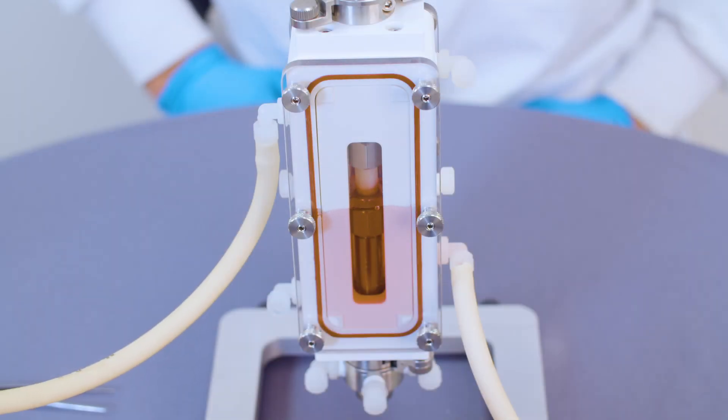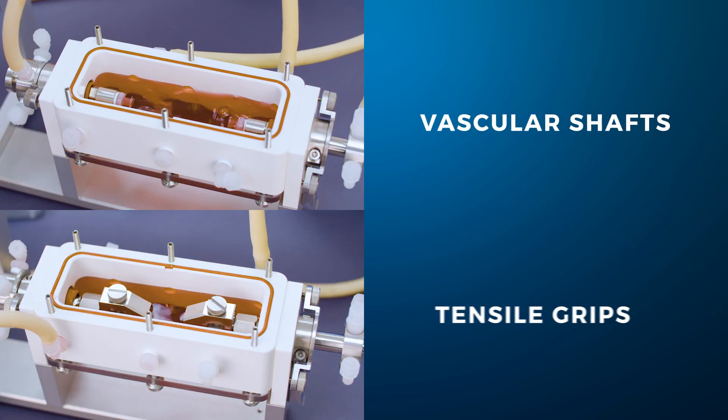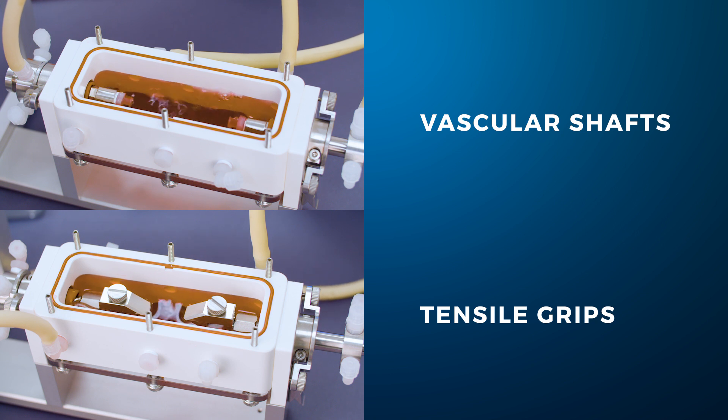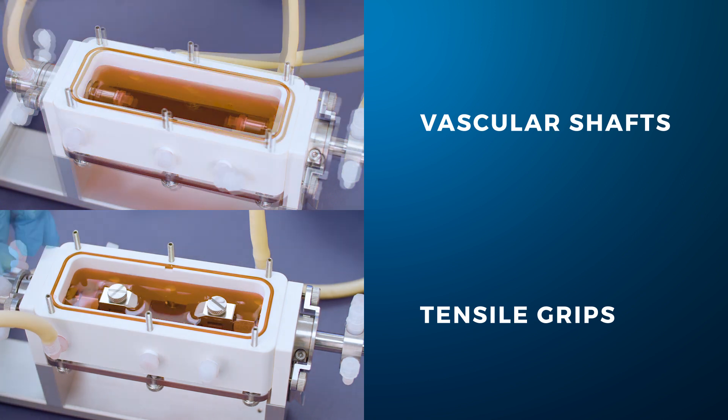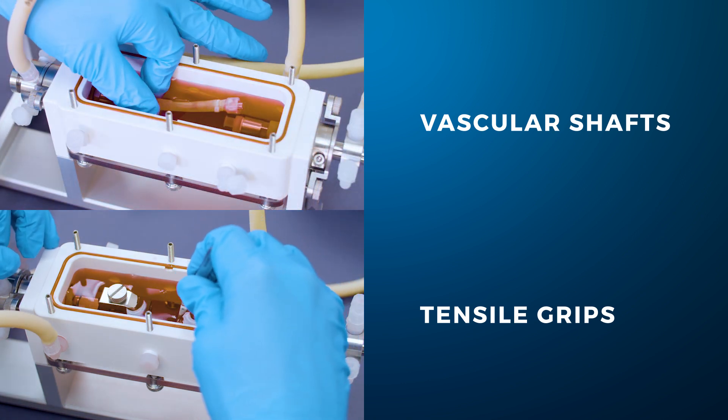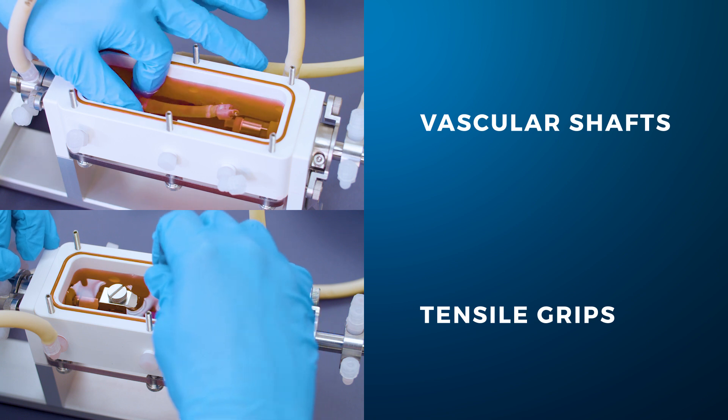Promptly fill up the chamber with culture media. When mounting tubular specimens in the vascular shafts or rectangular strips on the tensile grips, you can position the chamber horizontally and fill up the chamber above the fixture height in order to minimize sample's exposure to air during the mounting process.